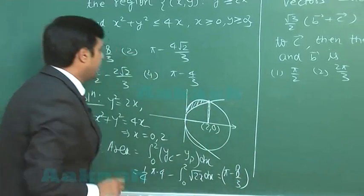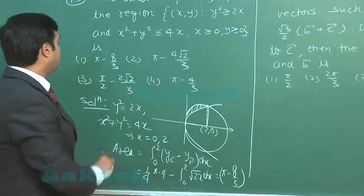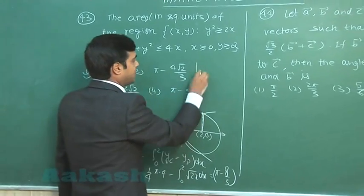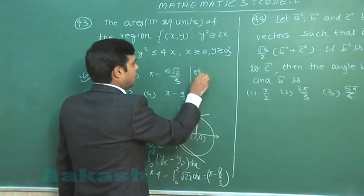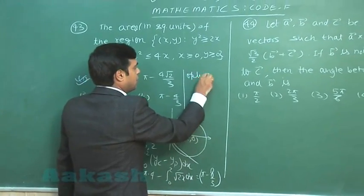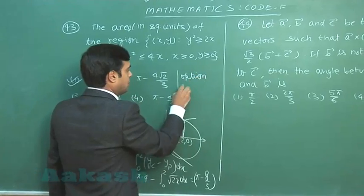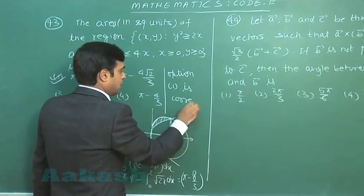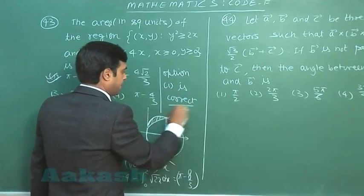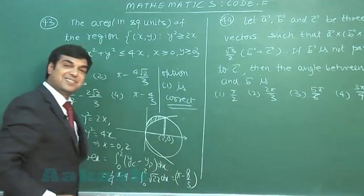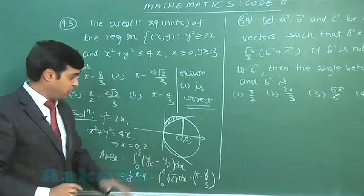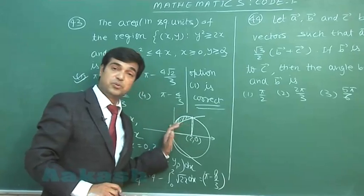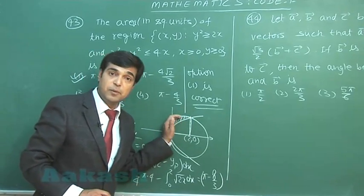We directly write (1/4)π(2²) minus the integral of √(2x) dx from 0 to 2, which simplifies to π minus 8/3. Option 1 is correct. It is not necessary to go through the full integral for the circular part.